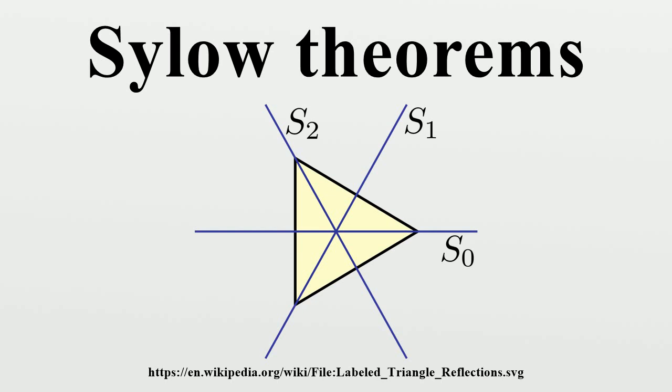Let ω be the set of all Sylow P subgroups of G, and let P act on ω by conjugation. Let Q in ω_0 and observe that then Q equals x Q x^(-1) for all x in P so that P is contained in N. By theorem 2, P and Q are conjugate in N in particular, and Q is normal in N, so then P equals Q. It follows that ω_0 equals {P}, so that, by the lemma, |ω| congruent to |ω_0| equals 1 mod P.